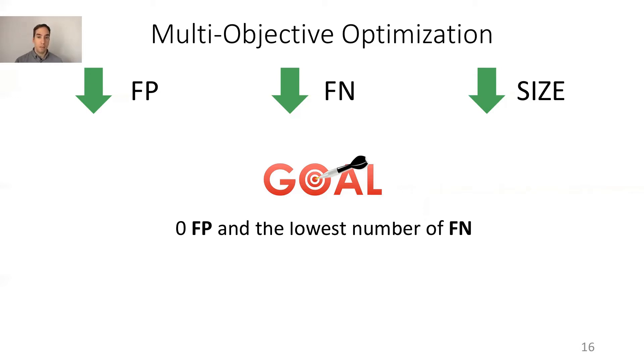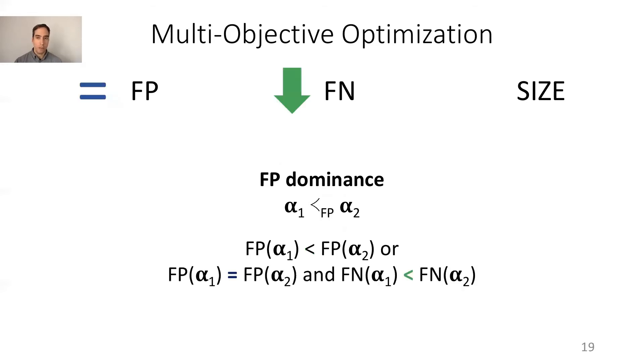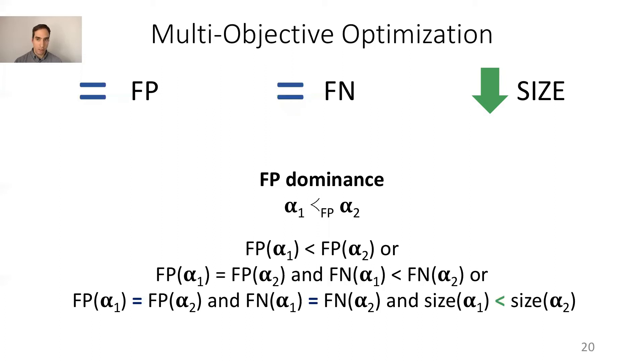Remember that our goal is unbalanced towards having zero false positives. For this reason, classic algorithms like NSGA-II will not be effective in our case because they favor solutions that have a good trade-off among all three objectives. So we define a fitness function giving priority to false positives, then false negatives, then size. We define the concept of FP dominance as follows: we say that alpha1 dominates alpha2 if alpha1 has less false positives than alpha2, or they have the same number of false positives and false negatives but alpha1 is smaller.